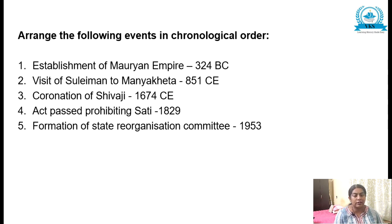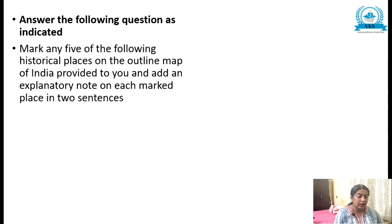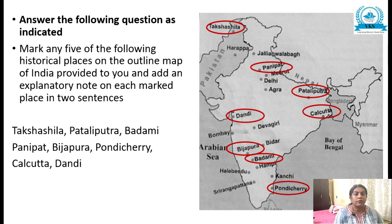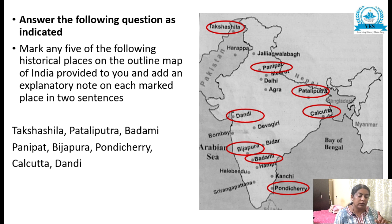That was a five-mark question to arrange events in chronological order. The next question is: mark any five of the following historical places on the outline map of India provided to you, and add an explanatory note on each marked place in two sentences. They will give eight places; out of these eight you will have to mark any five on the outline map of India. For marking each place you get one mark, and for the explanation another one mark — so two marks per place, totalling ten marks for the map question.